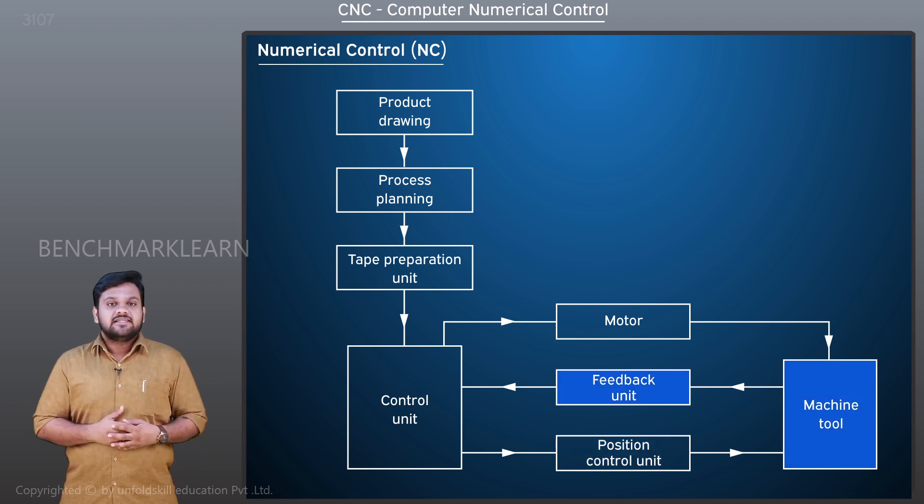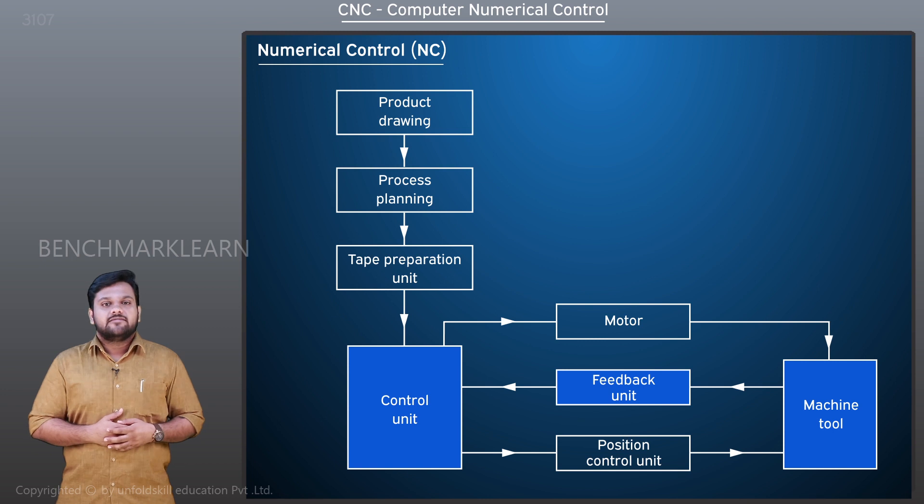The feedback signal is sent from the machine tool to the control unit. The feedback signal contains position information of the workpiece and tool. The feedback signal helps the control unit to correct the position of tool and workpiece if required.